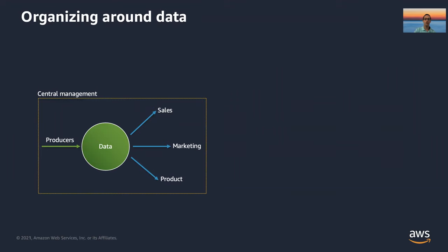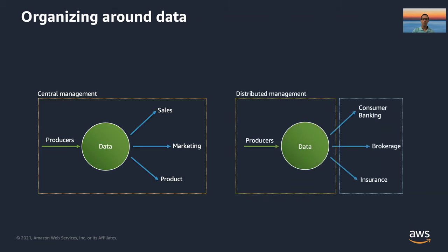Companies are changing to structure their organizations around their data specifically. We see patterns such as centrally managed data platforms where a single team is responsible for producing data and making it available for others to consume. There are also models like hub and spoke and data mesh that enable distributed management of data production and consumption. In all of these scenarios, there's a need for data governance to ensure the data is always protected and to drive adoption and usage within your organization.